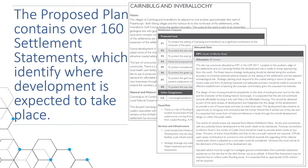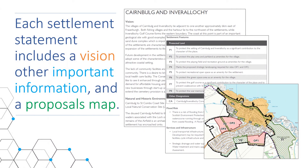The main part of the proposed plan identifies exactly where development is expected to take place. This information is presented in over 160 settlement statements. Each settlement statement contains a vision for that place and may include information on important features. A proposal map accompanies each settlement statement.